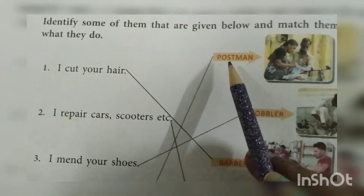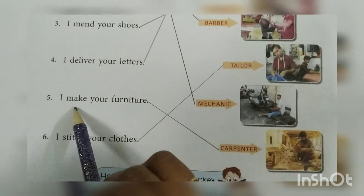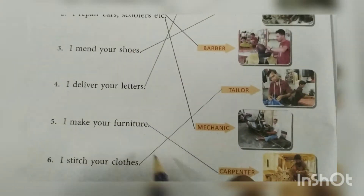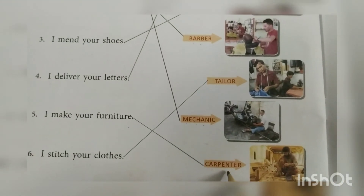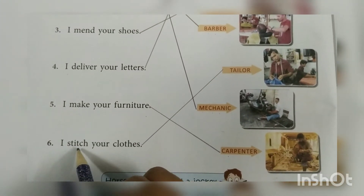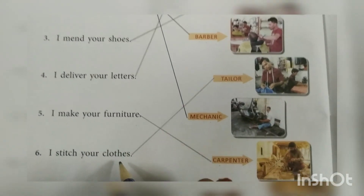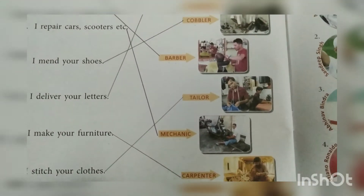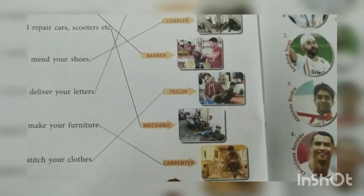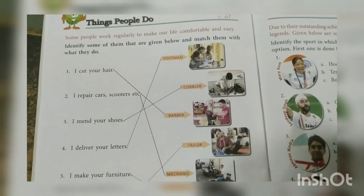Deliver karta hai? Postman, P-O-S-T-M-A-N, postman. Number five: I make your furniture — furniture kone banata hai? Carpenter. So match with Carpenter, C-A-R-P-E-N-T-E-R. Last, number six: I stitch your clothes — woh humare clothes stitch karta hai. So match with the tailor, T-A-I-L-O-R, tailor. Is tarah aapko saare pictures sentence ke saath match karne hai. Okay? Understand?